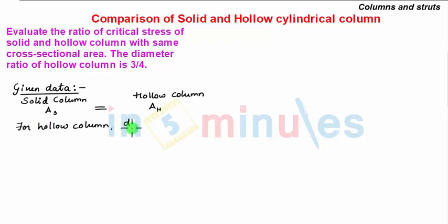So this diameter ratio will be small d by capital D which is equal to 3 by 4. And let the diameter of solid column be d1.